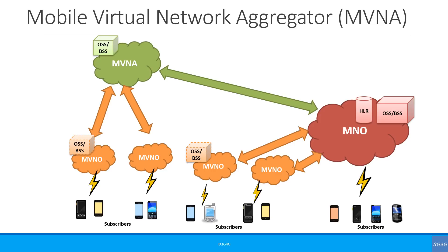Now let's look at the Mobile Virtual Network Aggregator, or MVNA. Sometimes it makes little or no sense to have many small MVNOs connected to the MNO, so the MNO may decide to only sell discounted bundles to really big players. An MVNA can aggregate lots of small MVNOs and, using collective might, be able to connect to an operator as a single MVNO. MVNAs typically will not have direct subscribers but only other small MVNOs connecting to it. It would typically have its own OSS/BSS to provide accurate billing information to the MVNOs it is serving.